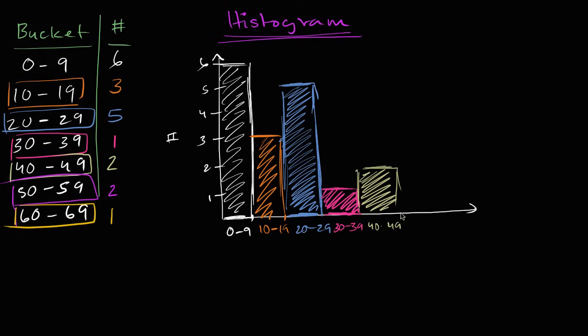50 to 59, we have two people. 50 to 59, we also have two people. So that's that right over there. That's this category. And then finally, 60 to 69, we have one person. 60 to 69, we have one person. We have one person. And what I have just constructed,